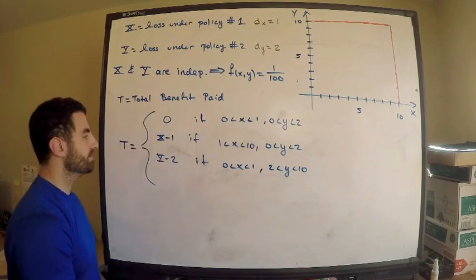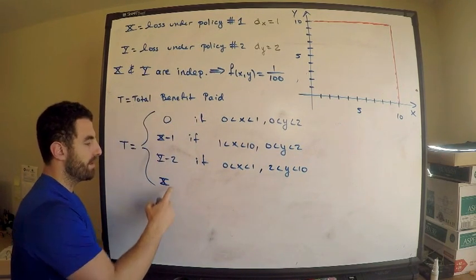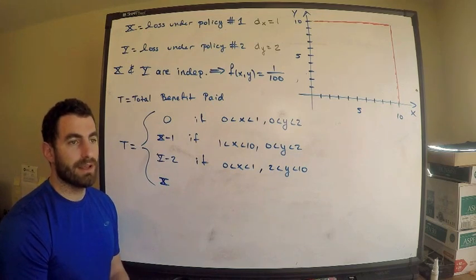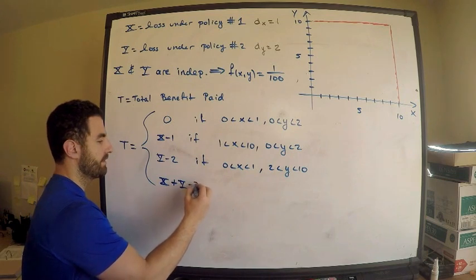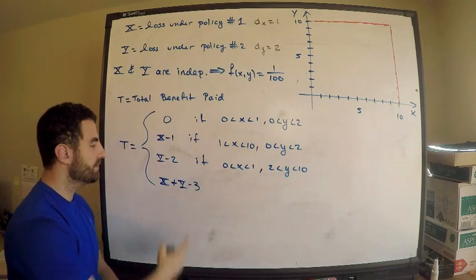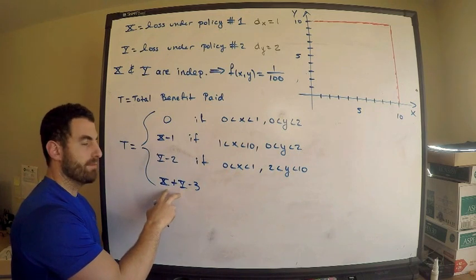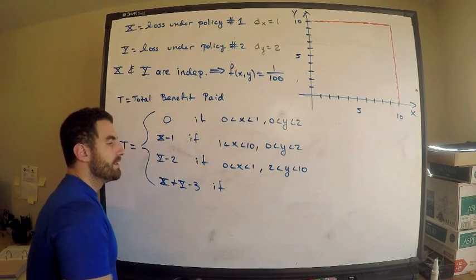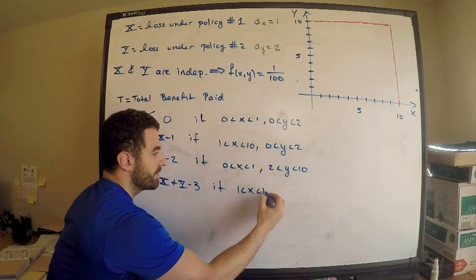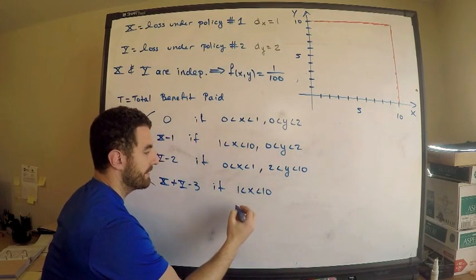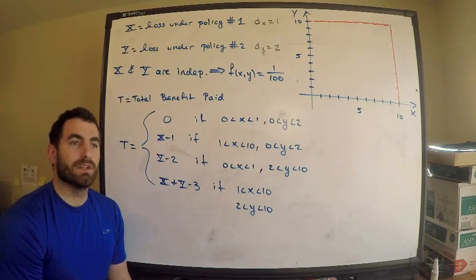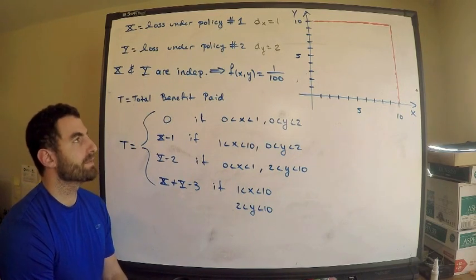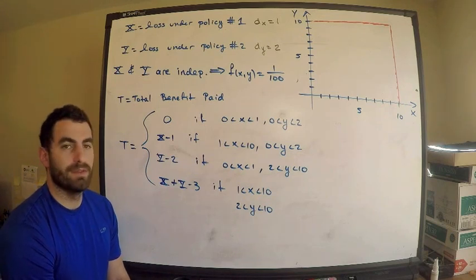We could also have both losses exceeding their respective deductibles, giving T = (x − 1) + (y − 2) = x + y − 3. This applies when 1 < x < 10 and 2 < y < 10. So T is a rather complex piecewise random variable, but we'll use this to answer our question.